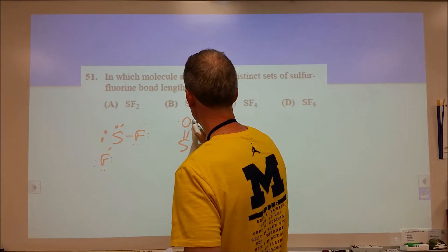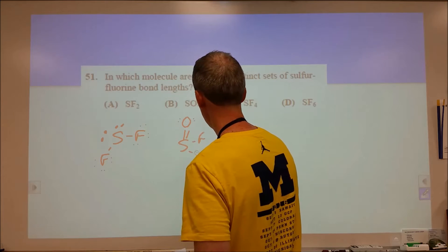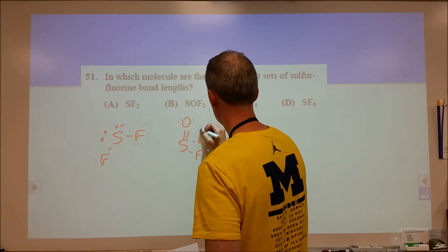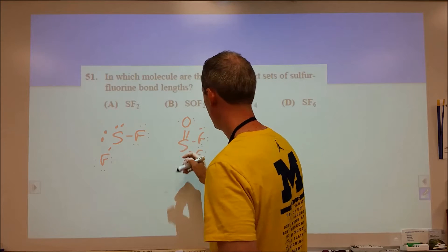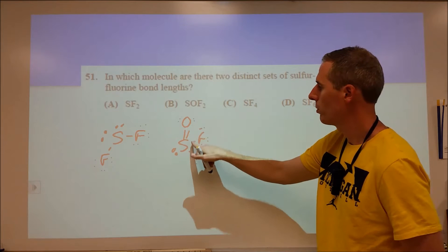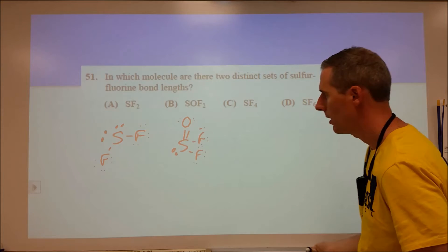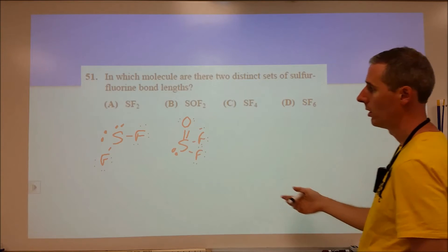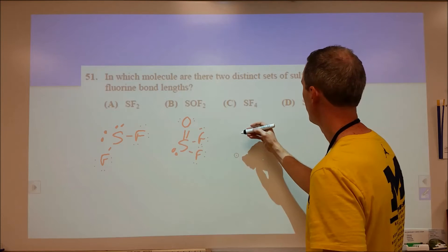Sulfur double bonded to oxygen, single bond to chlorine, single bond to chlorine. So we've got one, two, three, four electrons. We need two more. That again we've got one, two, three, four electron domains. It's tetrahedral. It's going to be trigonal pyramidal. So that's going to be the same two fluorine lengths.